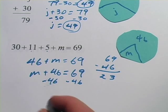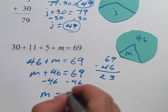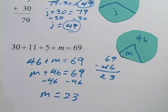Plus 46, minus 46, come out to 0, leaves just m on that side, and 69 - 46 is 23. So those are some problems about missing numbers.